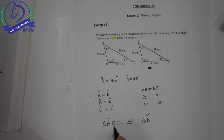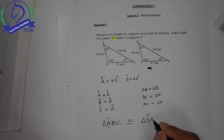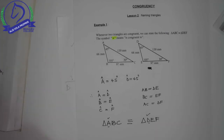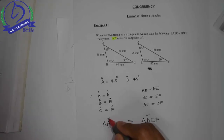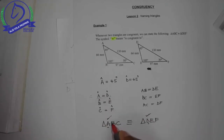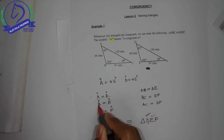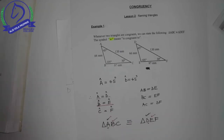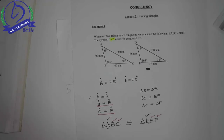Now if I start with B, which angle is equal to B? Angle E. So angle E follows. And then angle F is equal to angle C. So triangle ABC is congruent to triangle DEF. Angle A is equal to angle D, angle B is equal to angle E, and angle C is equal to angle F, as we can see.